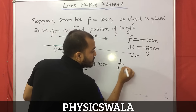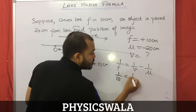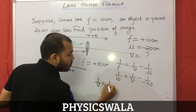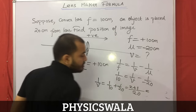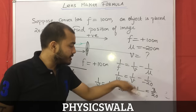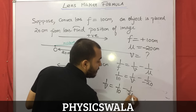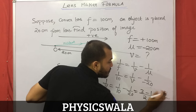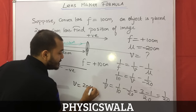Now apply the formula: 1/f = 1/v - 1/u. So 1/10 = 1/v - 1/(-20), which gives 1/v = 1/10 - 1/20. Taking LCM of 20: that gives (2-1)/20 = 1/20. So 1/v = 1/20, therefore v = 20 cm.